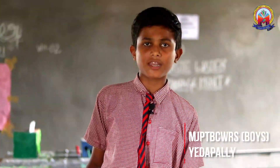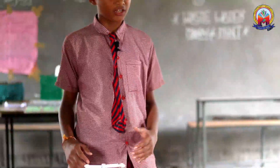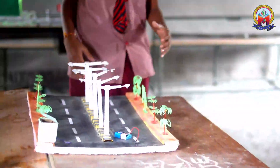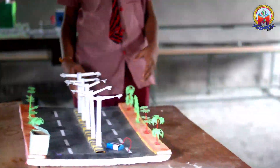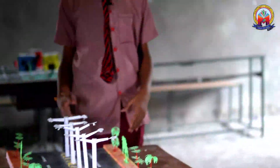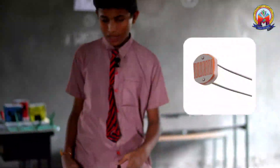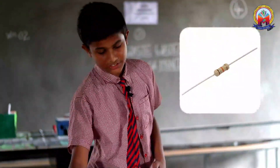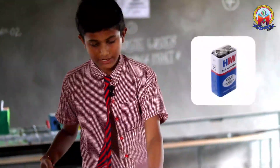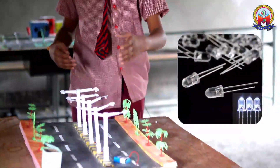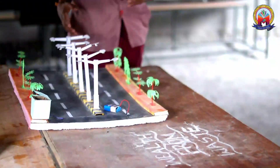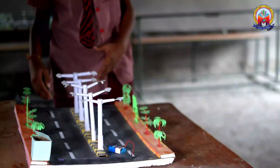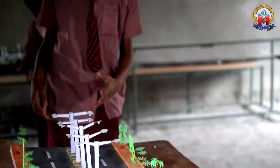If they don't get electricity they face a big problem. To save electricity we are doing this. The materials required to prepare this are a sensor, transistor, resistor, battery, and LED lights. These are the main things to prepare this.